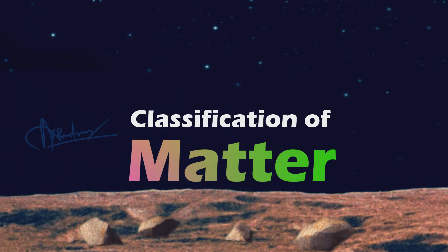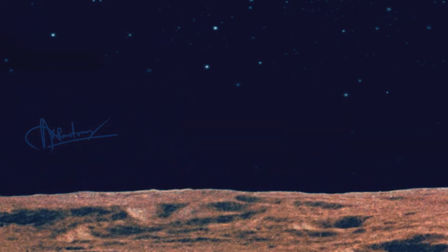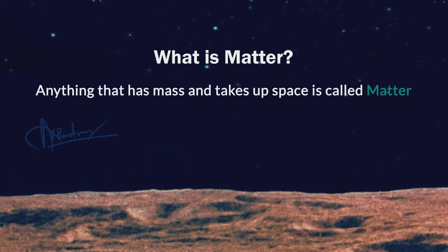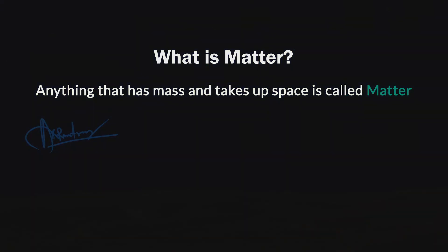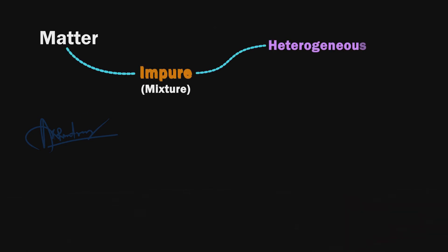Hello dears, today we will know more about classification of matter. Do you know what is matter? Matter is anything that has some mass and takes up some space. That means any substance or any object you can see all around you which has some mass can be considered as a form of matter.